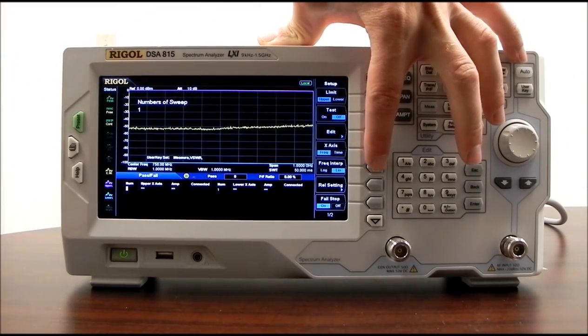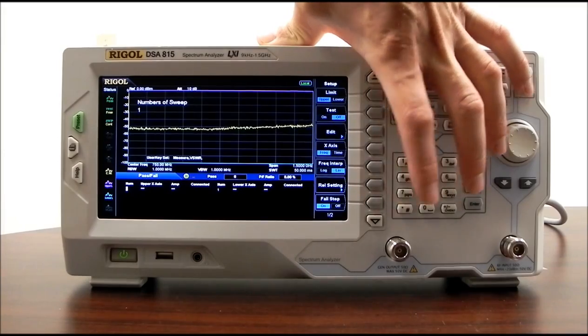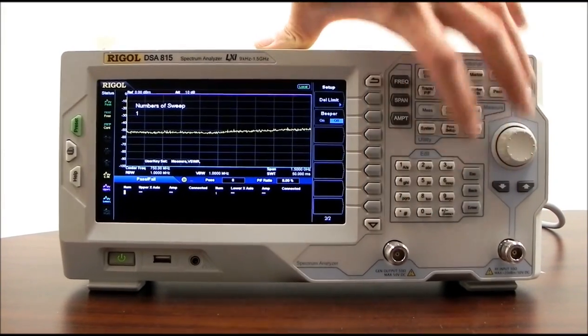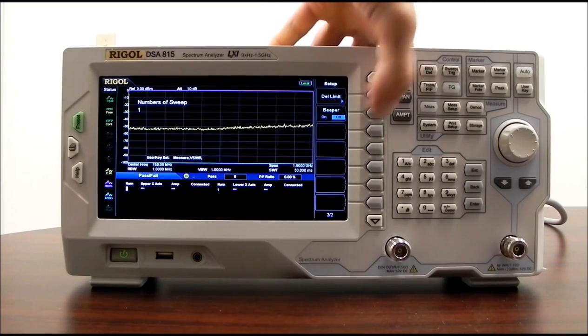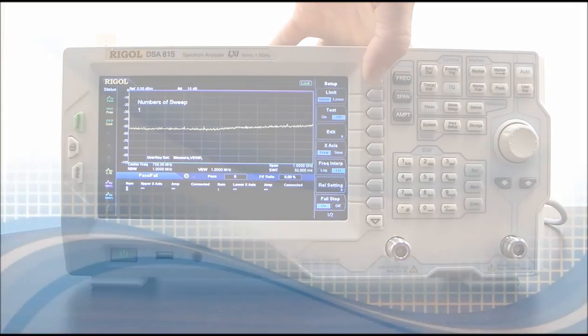We can set the x-axis as frequency or time. We can do frequency interpretation, log or linear. We can do relative pass or fail we can stop on. Let's go to page two, and we can delete our limits, and we can also turn a beeper on if we wanted to have an automated test. So that can be very helpful in an automated test environment.